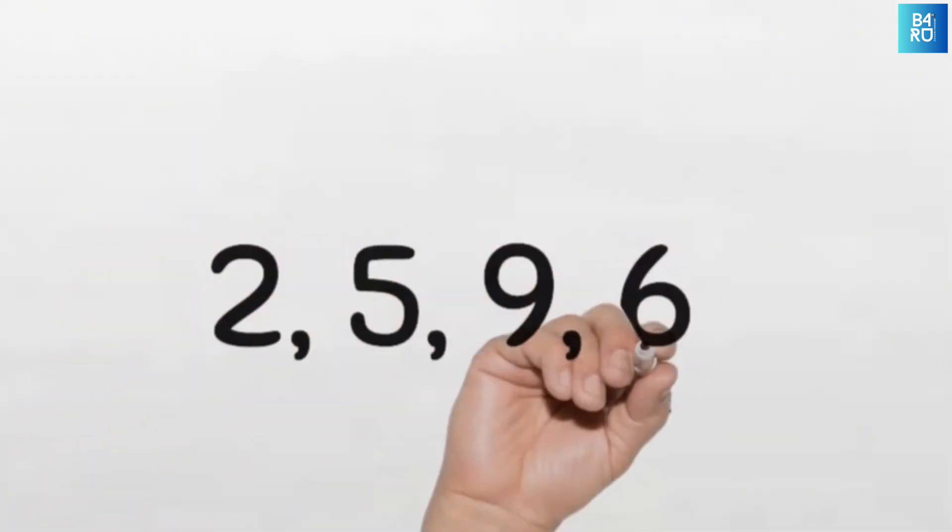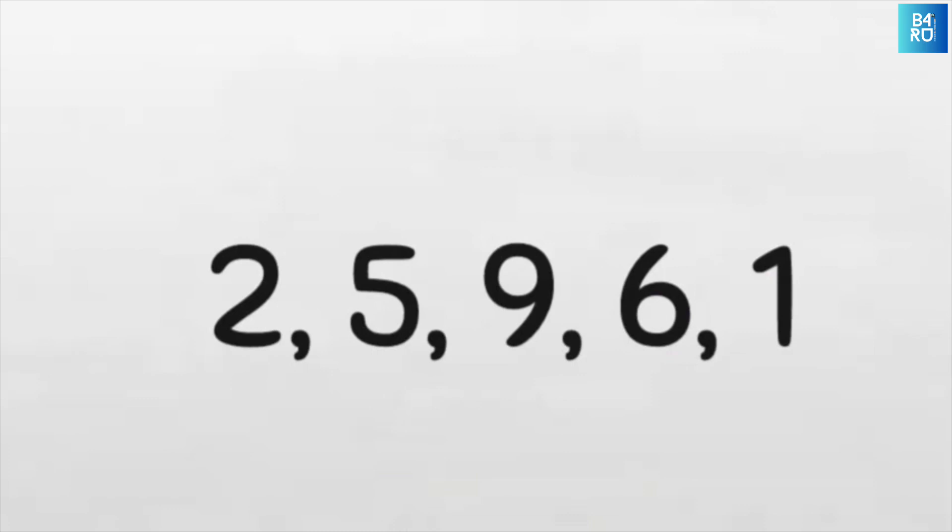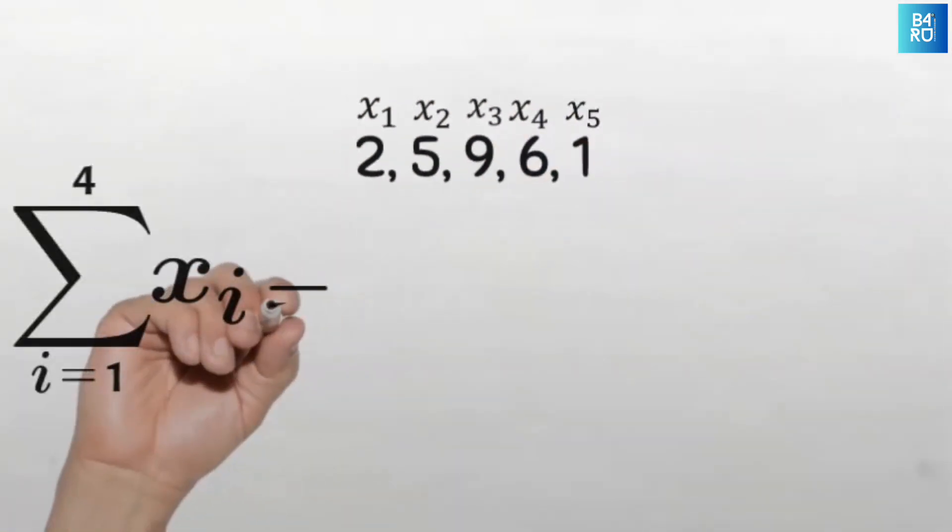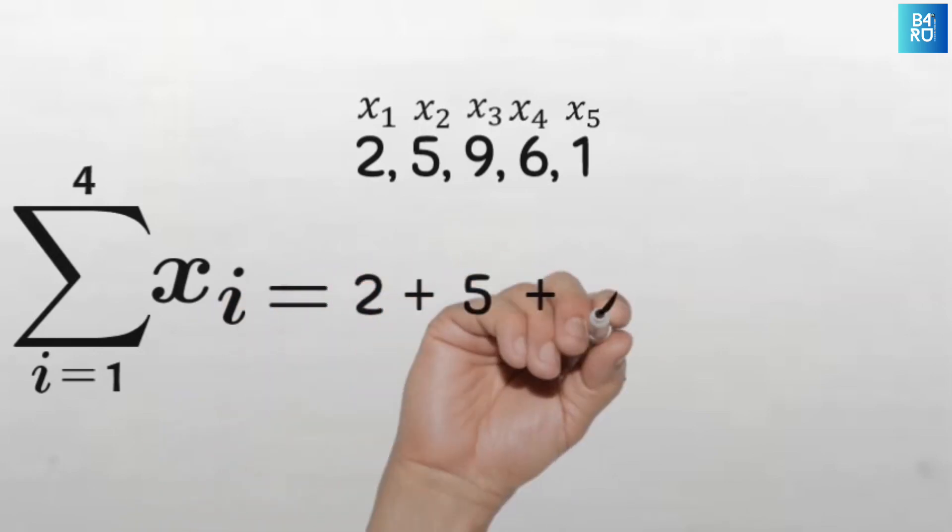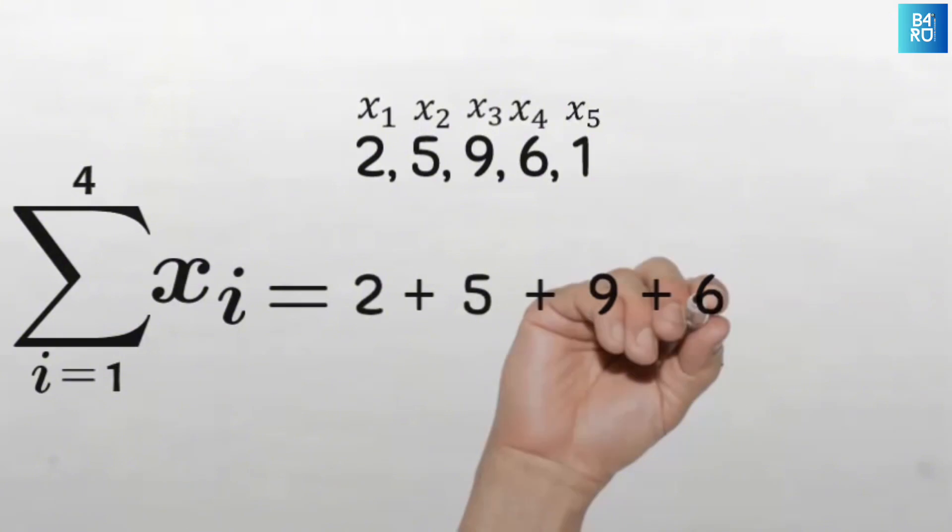Let's look at another example but this time with actual data. Here we have the age of five individuals. So our variable here is age. So our x is age and each value of age is sequentially arranged as x1, x2, x3, x4 and x5. So the summation of i equals 1 to 4 of x sub i will simply be x sub 1 which is 2 plus x sub 2 which is 5 plus 9 plus 6 and this will give us 22. Awesome.